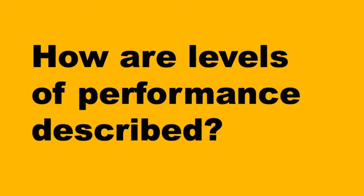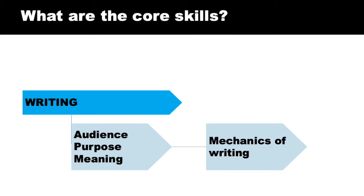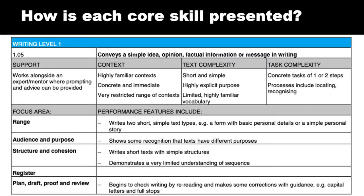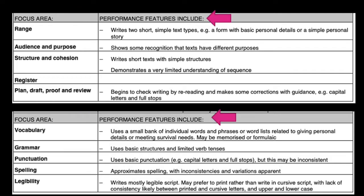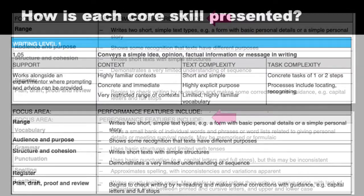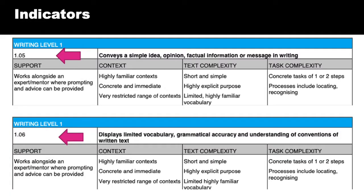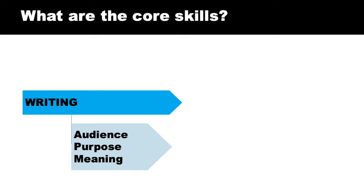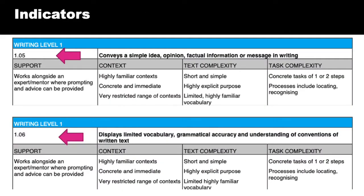Let's look at how each core skill is presented in the ACSF, using writing at level one as our example. Performance in level one writing is described in terms of indicators, focus areas, performance features and sample activities. All core skills and levels of the ACSF are presented this way. The writing core skill is divided into two broad indicator statements. The first indicator addresses audience, purpose and meaning making — the big picture. The second indicator addresses the mechanics of writing: vocabulary, spelling, punctuation, etc.